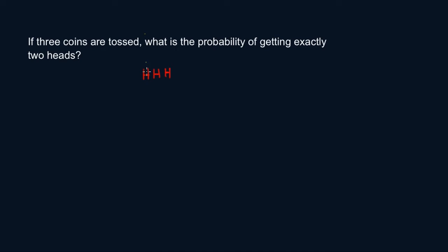The first combination is head, head, and head. Another toss could show head, head, and tail. Another could show head, tail, and head. Or you can also have head, tail, and tail.